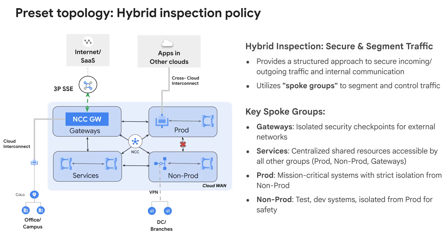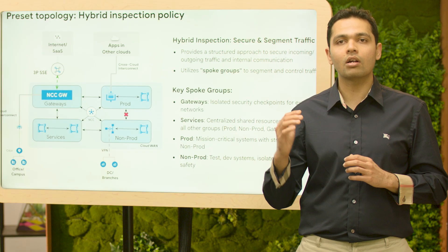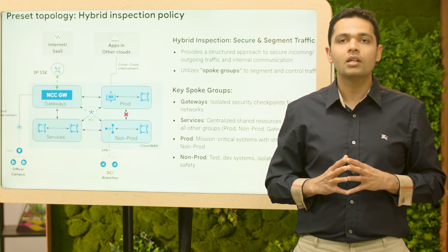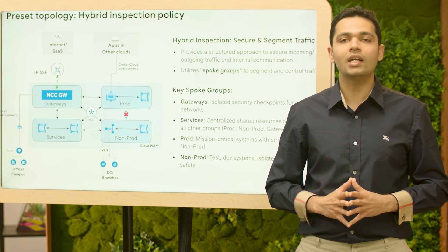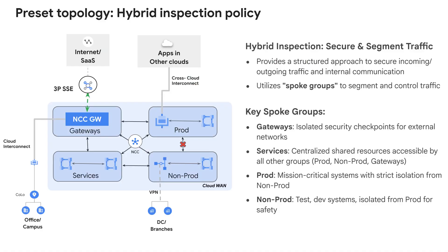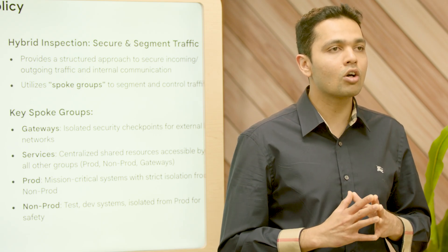The hybrid inspection model is designed for robust security and traffic segmentation using spoke groups to create isolated traffic zones. First, the gateways group acts as a security checkpoint managing all external network interactions — NCC Gateway will be associated with this spoke group. Next, the services group provides centralized shared resources accessible across all groups. Then we have the prod spoke group representing mission-critical applications, rigorously isolated from non-prod groups. Finally, non-prod houses test and development environments safely separated from production. This multi-layered structure ensures secure and controlled traffic flow.